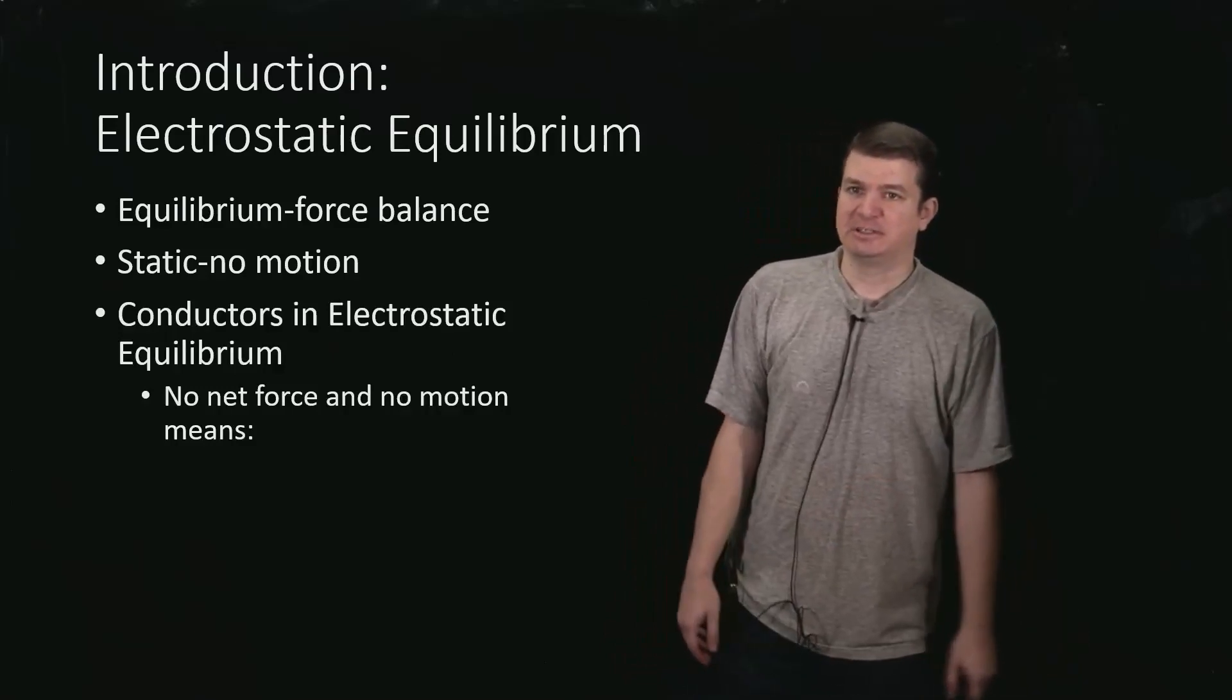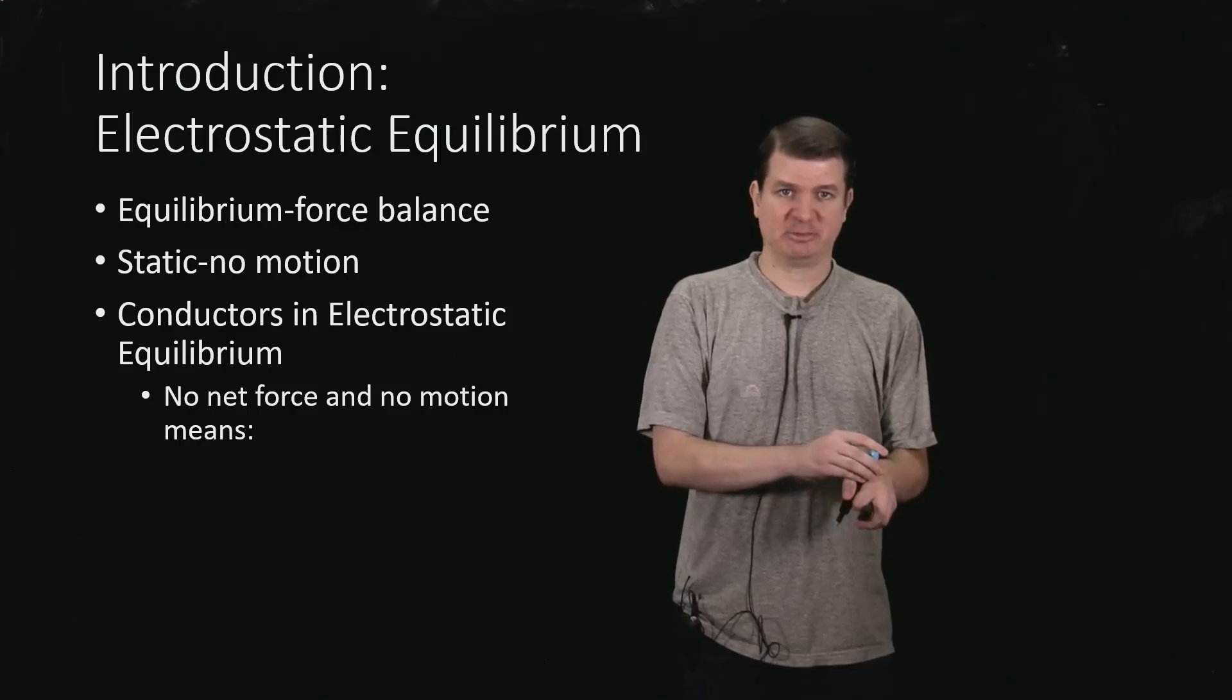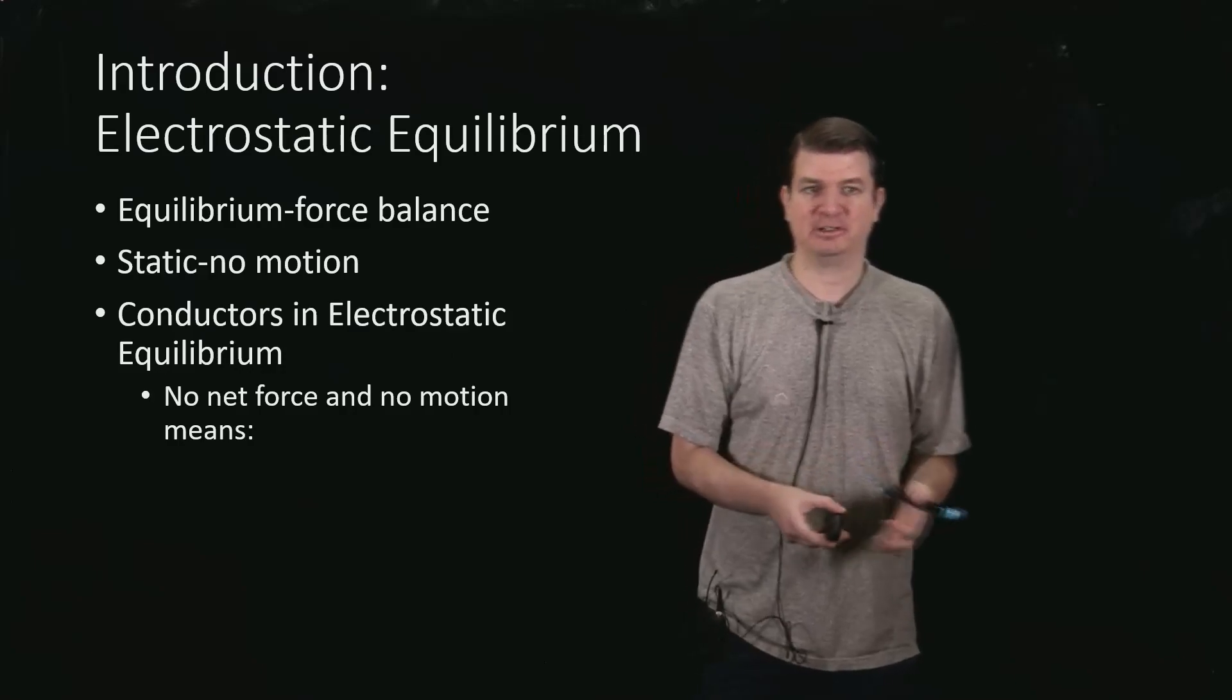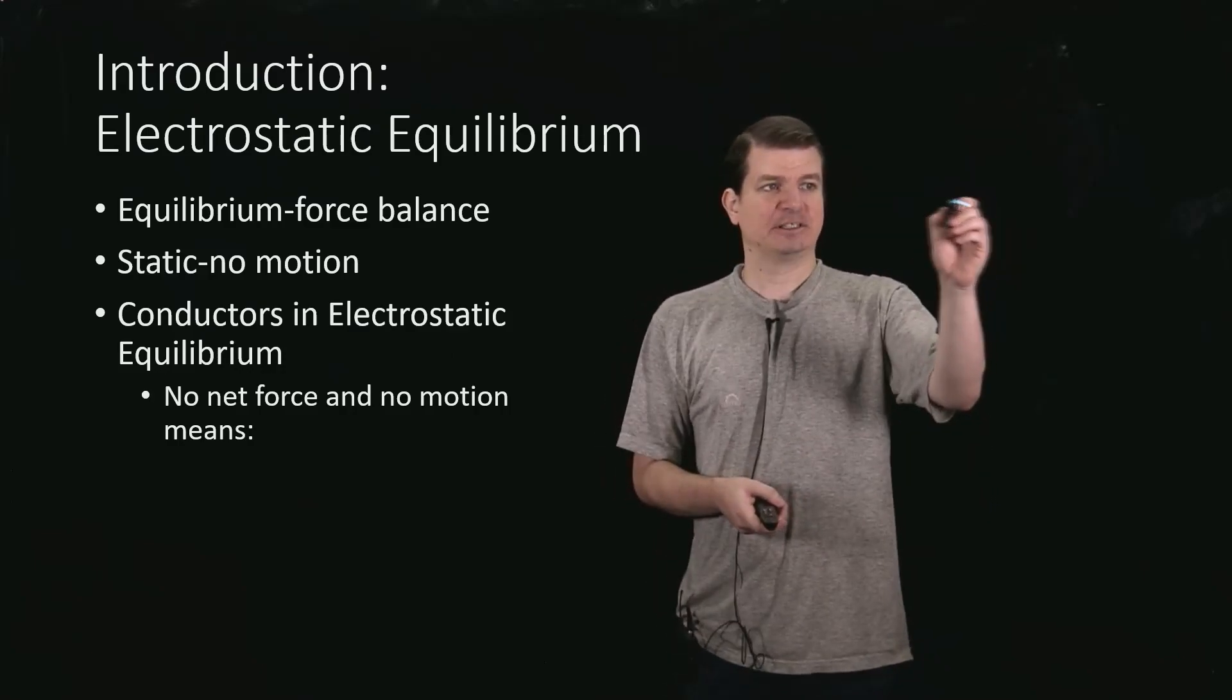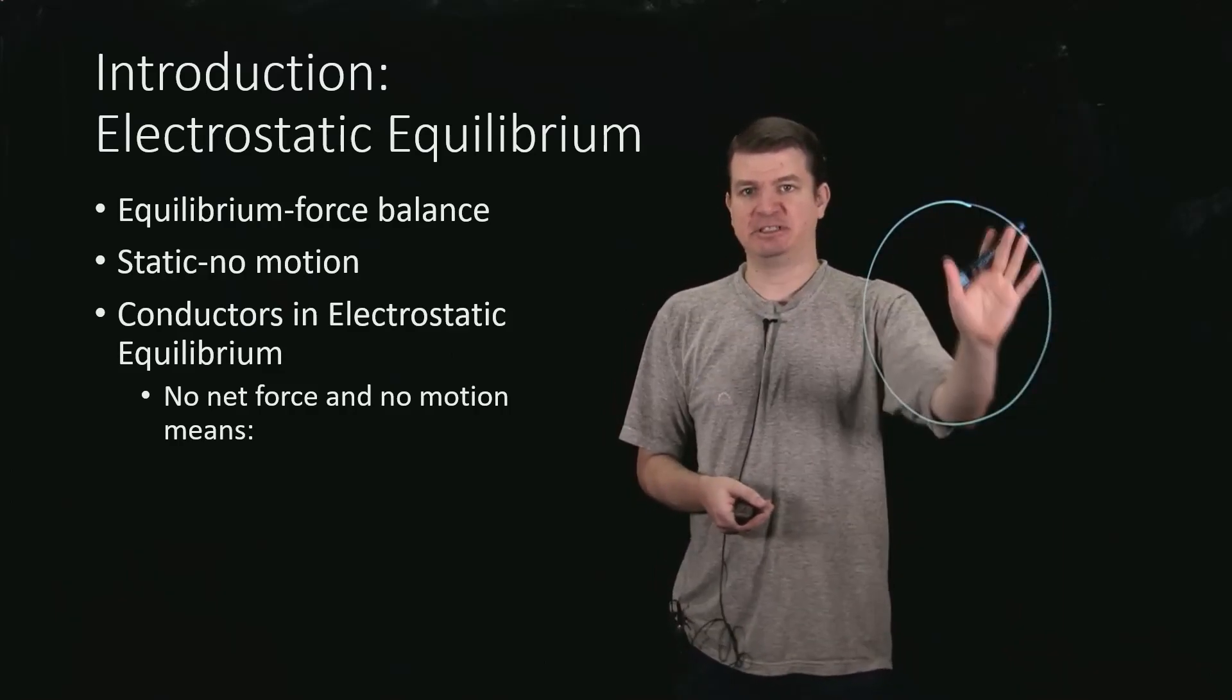So let's think about some conductor in electrostatic equilibrium. The fact that there is no net force and no motion implies quite a lot for our charge distribution. So here, we'll draw a nice circular conductor. This is like maybe a solid disk.